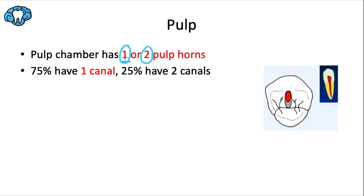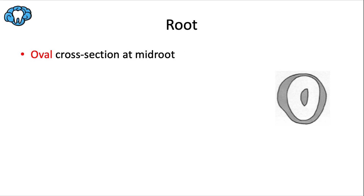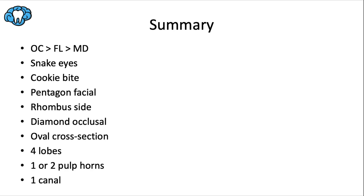75% of these teeth have one canal and 25% have two pulp canals, usually a facial and lingual pulp canal. This percentage might look familiar because it's the exact same as the maxillary second premolar. Even though the crown is circular — again describable as a diamond shape — the cross section is oval as the root tapers mesially and distally. Both mandibular premolars will look very similar in their cross sections.